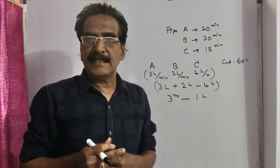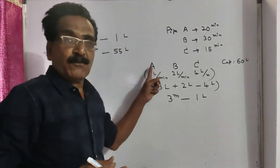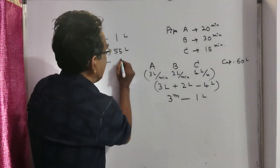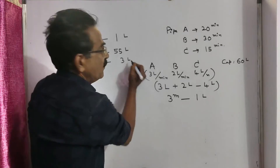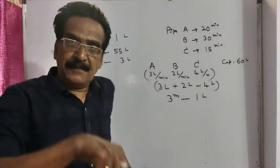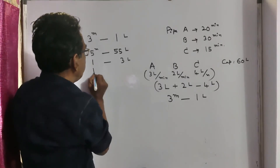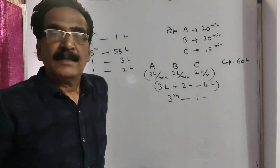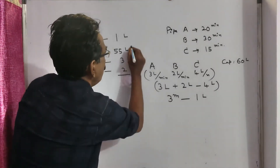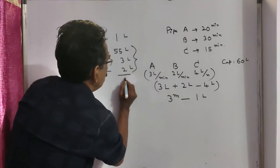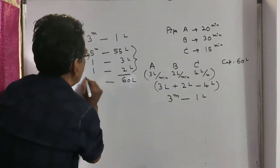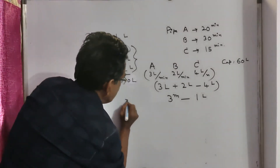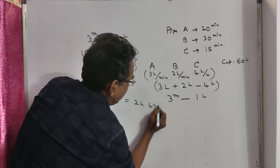So, in the next minute pipe A is opened, and it adds 3 liters of water. And in the next minute, pipe B is opened and it adds 2 more liters. So our tank is filled now — 55 plus 5 equals 60 liters. So 60 liters of water will be filled in 167 minutes, that is equal to 2 hours 47 minutes.